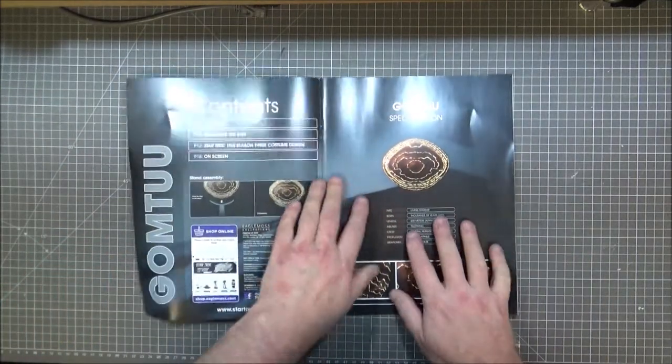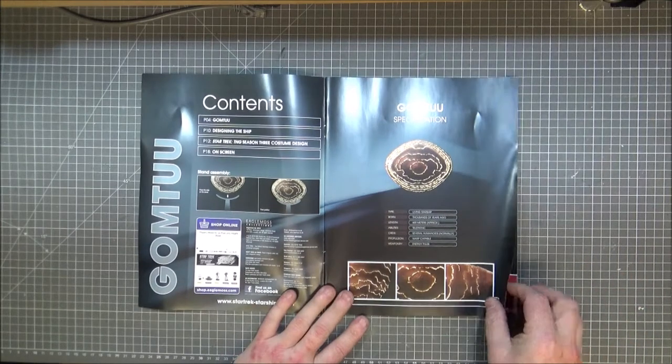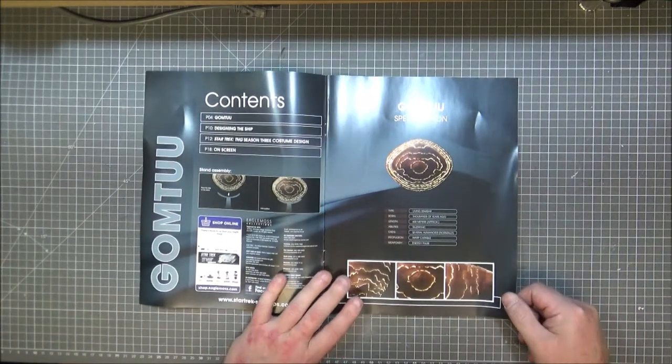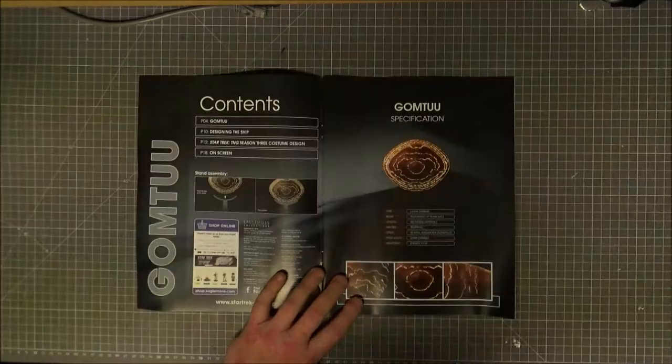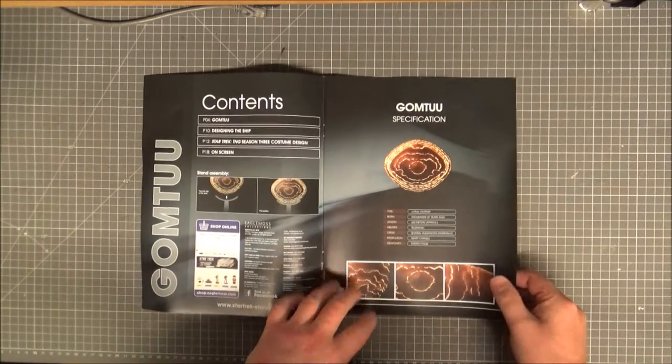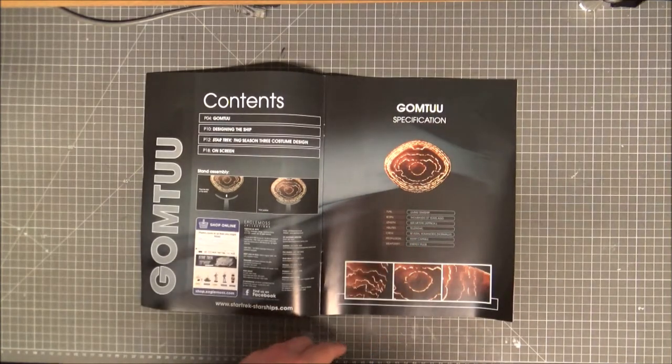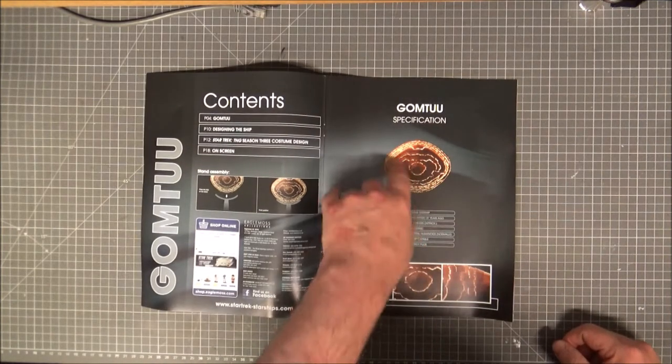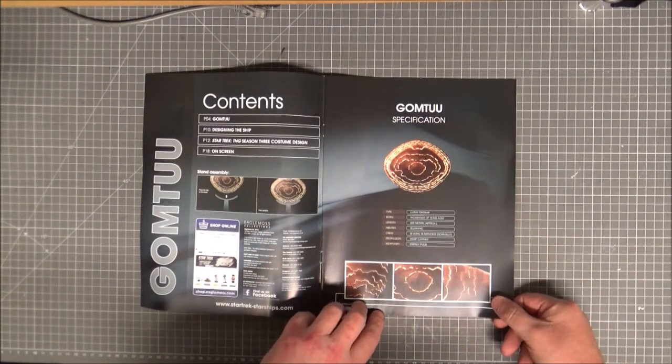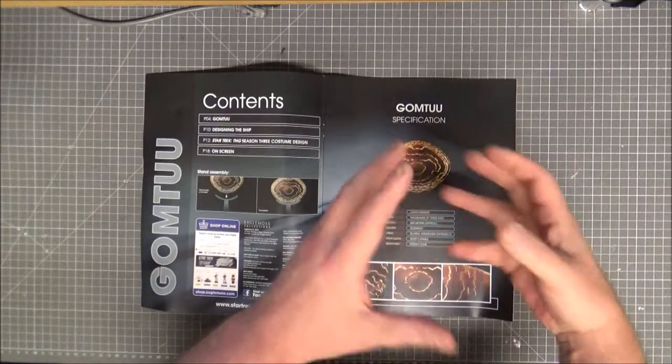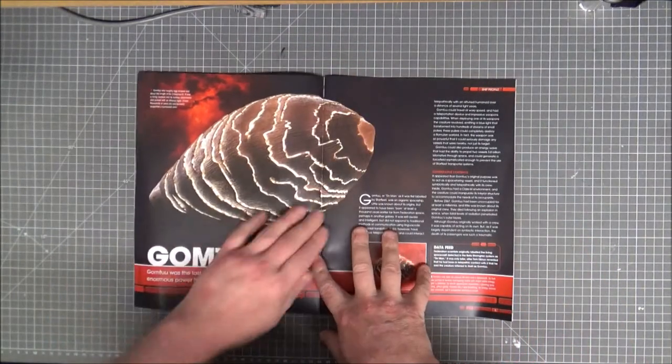So let's get on with this. Gomtu was a space probe kind of living being that was psychically linked to Tam Elbrun, 600 meters long, telepathic, several humanoids normally because it wanted a family on board. But it had been on its own for so long and it wanted to die, so it put itself next to a supernova where it was going to blow up.